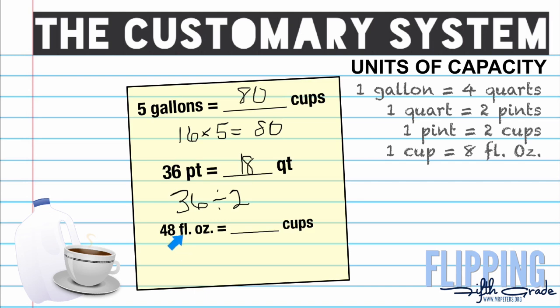Finally, 48 fluid ounces equals how many cups? Since 8 fluid ounces equals 1 cup, we take 48 divided by 8 to get 6 cups. Remember, sometimes it may take multiple conversions — for example, converting gallons to quarts, then quarts to pints, then pints to cups. Similarly, converting inches to miles requires going through feet first. Sometimes you have to convert multiple times and do multiple steps to solve a problem. And that's the customary system.